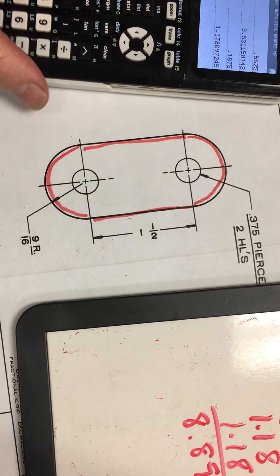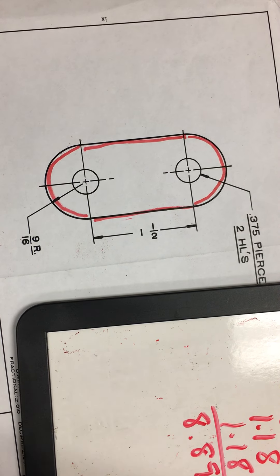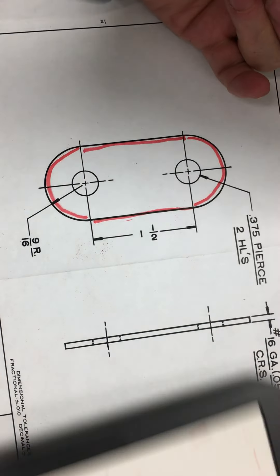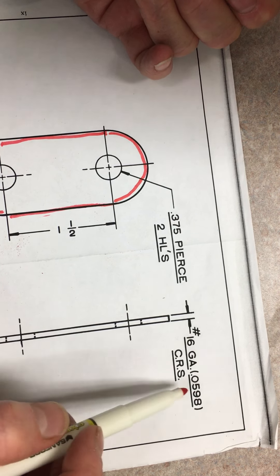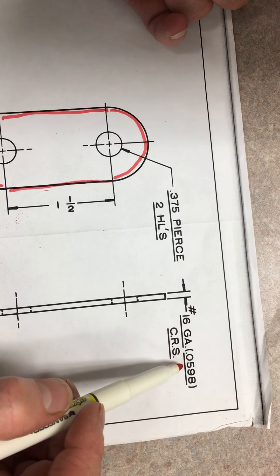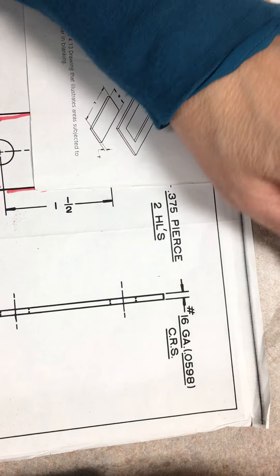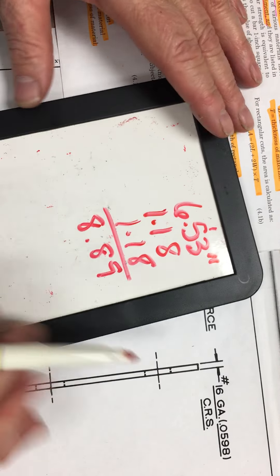Looking at my information here, we need to know what material this part is made from. Here it says Cold Roll Steel. It says it is a 16 gauge with a thickness of 0.0598.